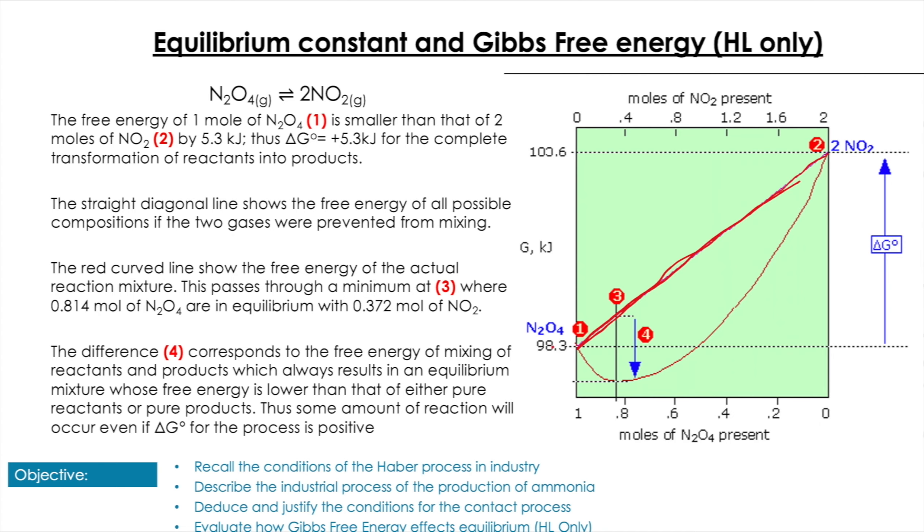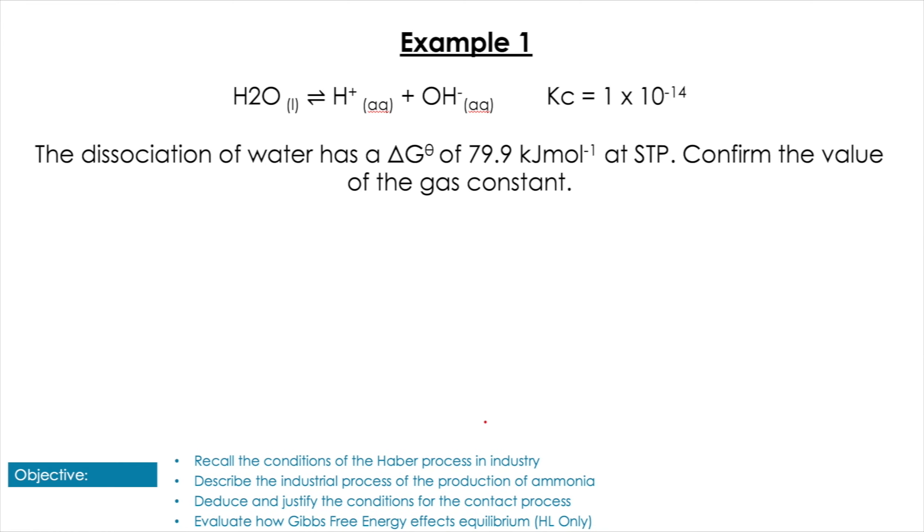But the curved line, the red curved line, shows us the free energy of the actual reaction mixture. And the difference between the bottom point of that line and the straight line corresponds to the free energy of mixing these together, which results in equilibrium. So that theory takes us a little bit further than the IB requires there. Let's have a look at how we'd actually apply this in a question.